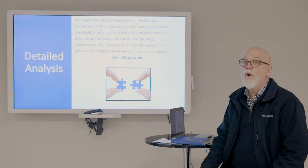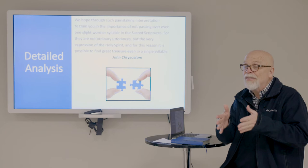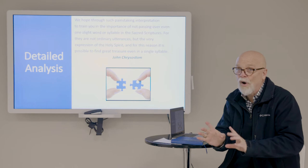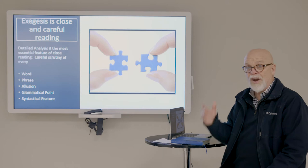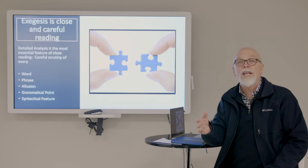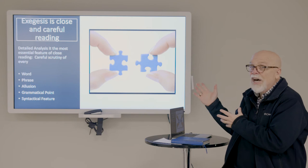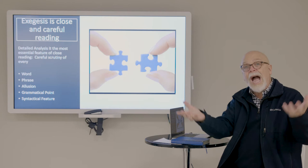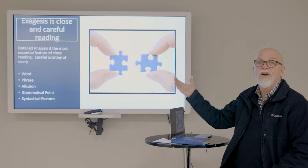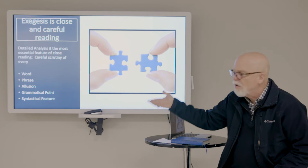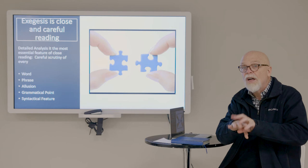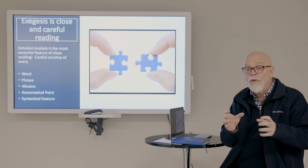When we do detailed analysis, we are taking an in-depth look at the trees in the forest — the individual trees. Exegesis, as we defined in week one, is simply the close reading of the text. Detailed analysis is the essential feature, the key component of how we do close reading. We're going to pay attention to words, phrases, allusions, grammar, syntax — how words relate to one another, their word order.